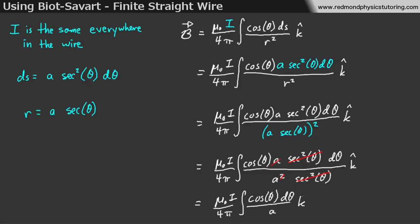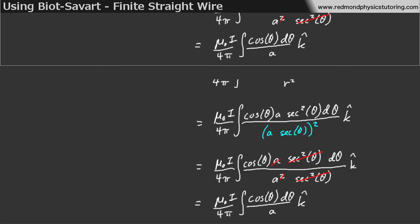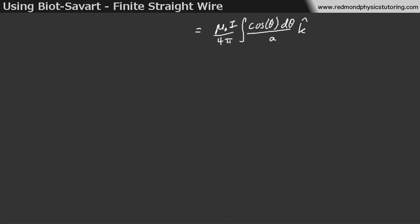We can pull out the a as well, because the a is also constant throughout the integral. And the final expression we get for this is mu naught i over 4 pi a, then we take the integral of cos theta d theta, and the direction, again, is in k-hat.